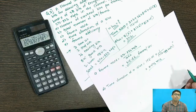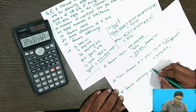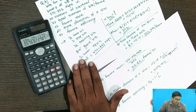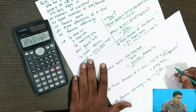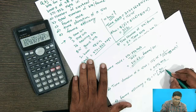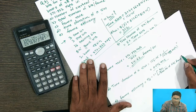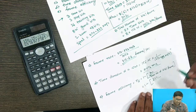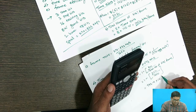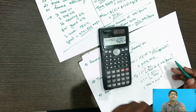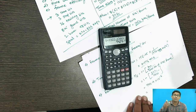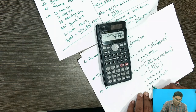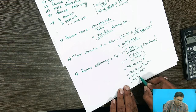Now I want to calculate the frame efficiency, indicated by NF. The formula is: 1 minus (BOH divided by total number of bits per frame), multiplied by 100 for percentage. Putting in the values: 1 minus 322 divided by 1,250, multiplied by 100. This gives 742.4 into 10 raised to minus 3 into 10 raised to 2, which simplifies to 74.24%. So the frame efficiency is 74.24%.